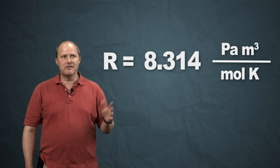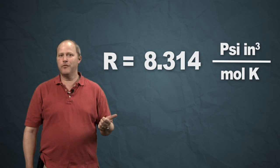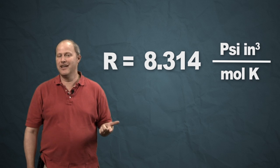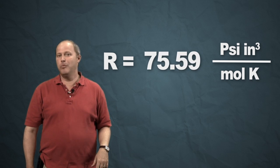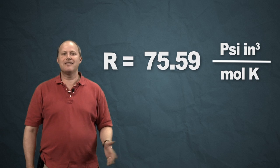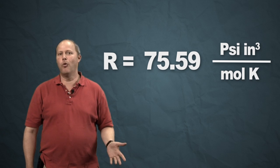And I also looked up some absurd ones. If you want to use pounds per square inch for pressure and cubic inches, then you end up with 75.59 PSI inches cubed per mole per Kelvin.